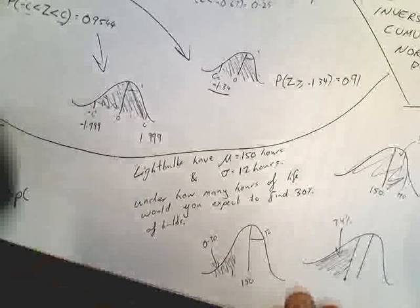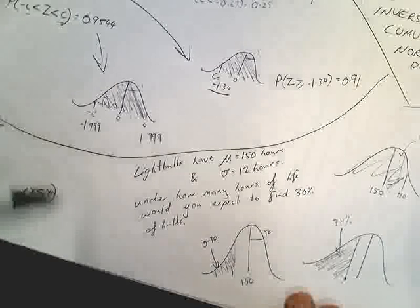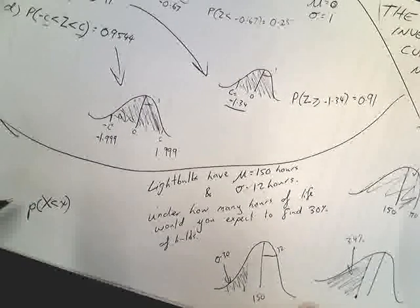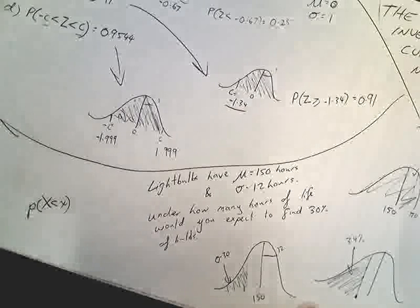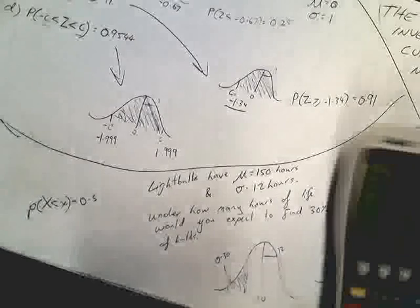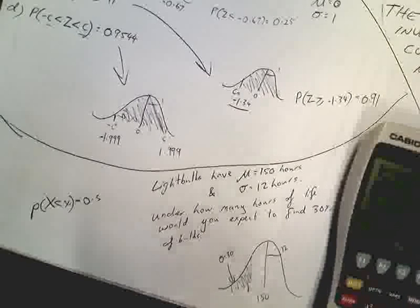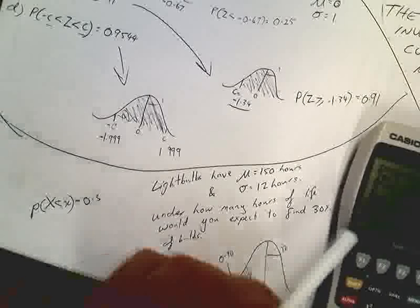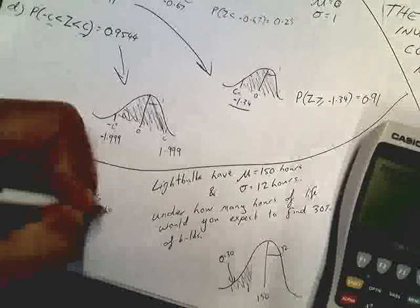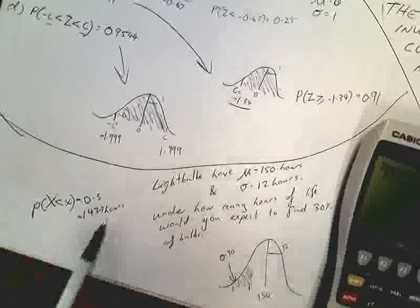So, the probability that X is less than x. Now, you can see I'm using X and x, not C and Z. We use this capital X, small x thing when we're dealing with normal distributions, not standard normal distributions. X is 0.3, and we need to find x. Okay, so pretty simple. It's a left-tail, the area is 0.3, standard deviation of 12, normal mean of 150. 143 hours, 143.7 hours. So, what that means is in this particular factory, 30% of bulbs will have a life of 143.7 hours or less.